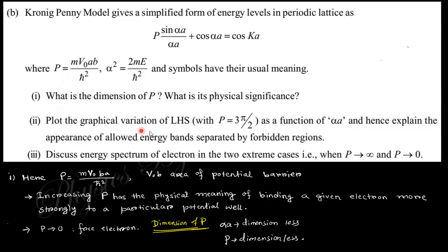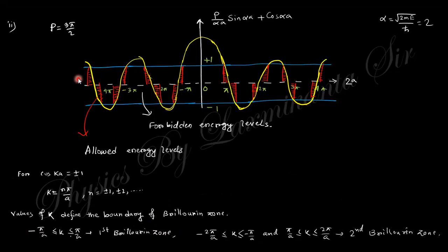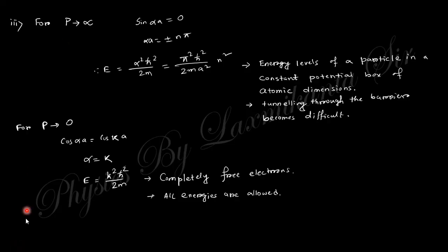The next question asks for the graphical variation when P equals 3 pi by 2 as a function of alpha times a. Hence, explain the appearance of allowed and forbidden regions. This is the graph, and these portions are allowed, and the rest are the forbidden energy gaps.